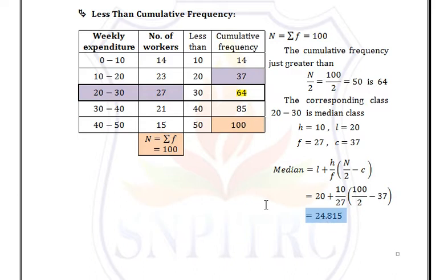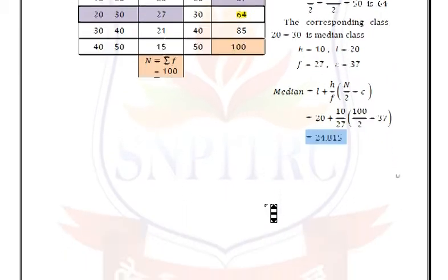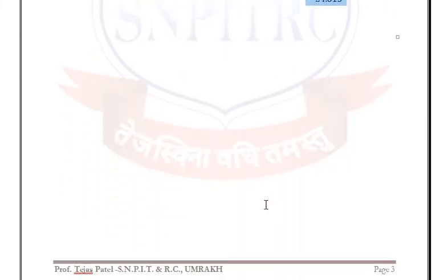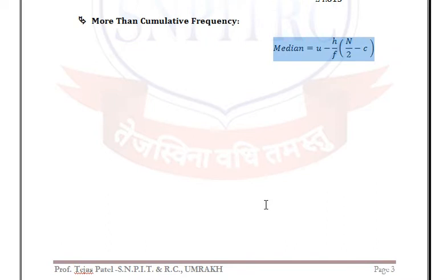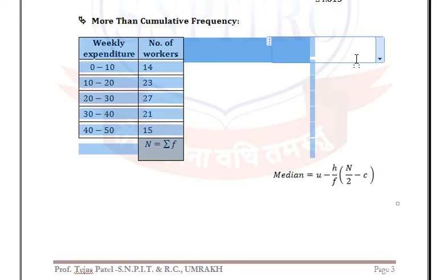Now solve the same example using more than cumulative frequency distribution. In that case, the formula is: U − (H/F) × (N/2 − C). Let's create the table.